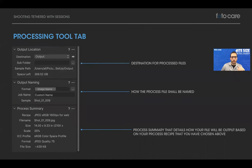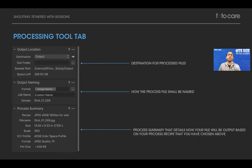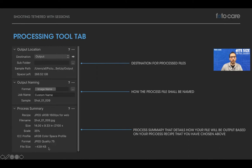Scrolling further down, there's output location — your destination for processed files — and output naming, which controls how the processed file is named. You have the ability to add onto the name or change it on its way out. Below that is a process summary, which tells you based on the currently highlighted image and selected recipe how the image will break down — file type, color space, scaling size, pixel dimensions, quality, and approximate file size.